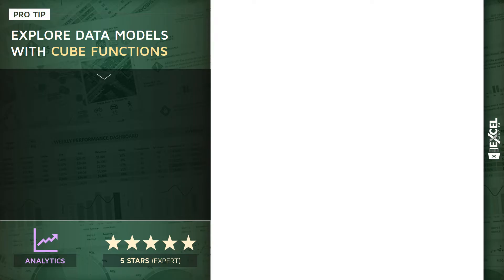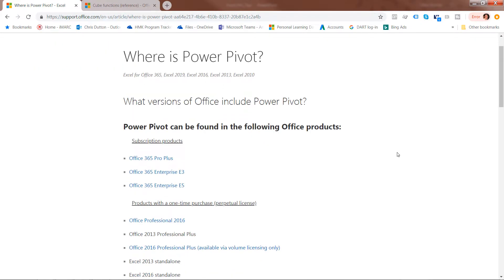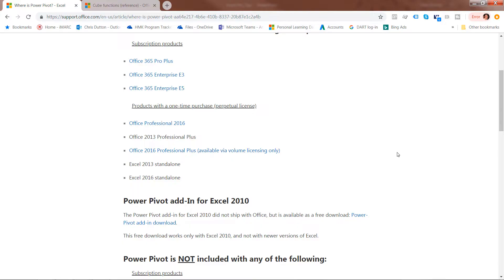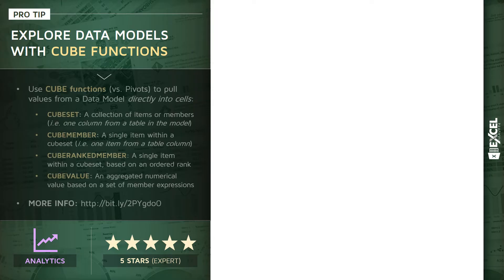Two quick caveats before we dive in: number one, if you haven't viewed the data modeling pro tip or learned about data models in the past, I'd highly encourage you to do so. Number two, you're going to need a version of Excel that's compatible with the data model and Power Pivot. If you're not sure, search for 'where is Power Pivot' and you'll find the Office support website showing which Excel versions include access to these tools.